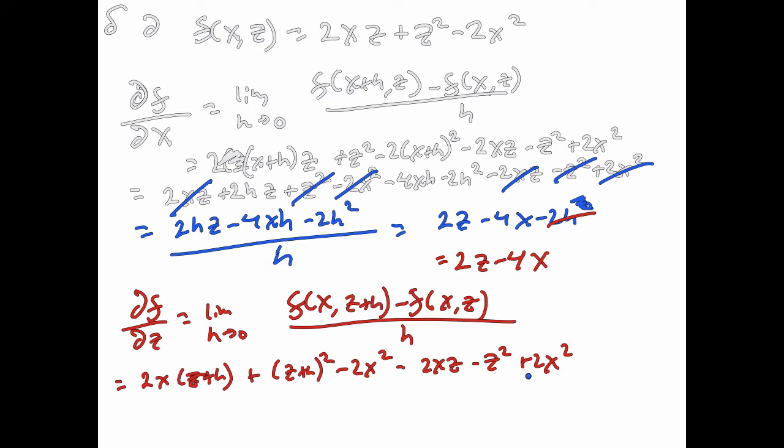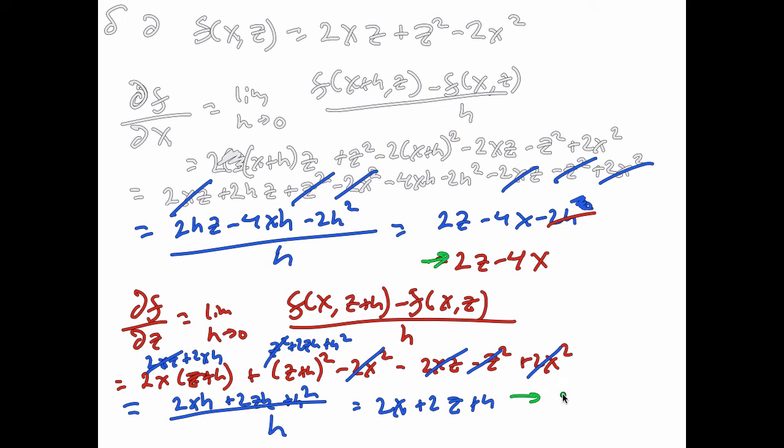Cancel that one. And note that this thing is z² + 2zh + h². So we'll cancel the z squareds. And this thing is 2xz + 2xh. So we'll cancel 2xz's and we're left with 2xh + 2zh + h². Divide that by h. You get 2x + 2z + h. And in the limit, as h goes to zero, you go to 2x + 2z, which is the derivative, the partial derivative of f with respect to z.